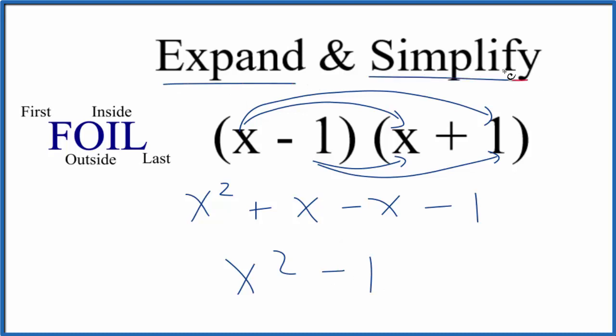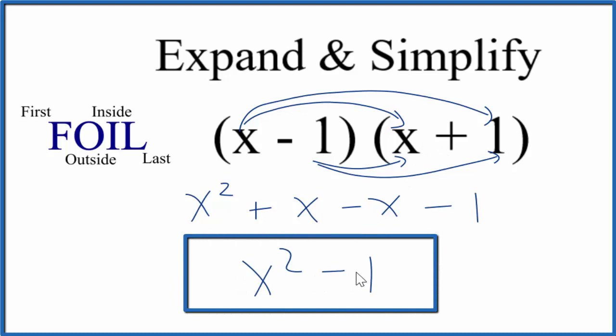So when you expand and simplify x minus 1 times x plus 1, you get x squared minus 1.